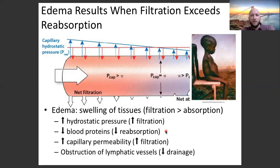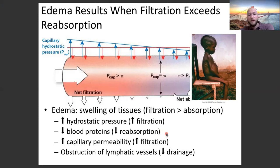Kwashiorkor results from protein malnutrition. When food aid is sent to areas with famine or disaster, we need to be careful about what kind of food is sent — if only carbohydrates like pure glucose are provided, people have energy to survive but lack the protein needed to prevent edema. This leads to kwashiorkor, characterized by bloating of the stomach, in places where people can get enough calories to survive but not enough protein.